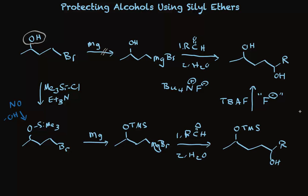So, protecting alcohols using silyl ethers is a simple concept that can be implemented simply. Treat the hydroxyl group that would otherwise interfere with chemistry you wish to do with TMS chloride and triethylamine to make the ether. Conduct the chemistry — whether it's a Grignard reagent, treatment with strong base, or other types of chemistry that the OH would prevent — to make a product that is still the TMS ether, then regenerate the OH group using fluoride in the form of tetrabutylammonium fluoride.